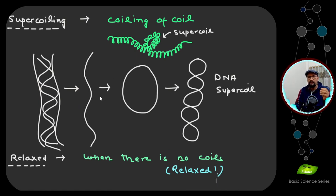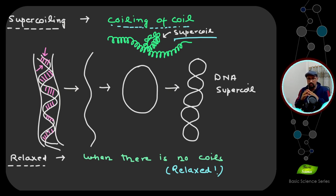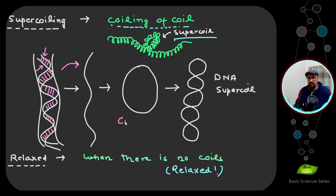Now let's look at supercoiling in a little more detail. Supercoiling is simply the coiling of a coil — if a coil gets coiled again, that's supercoiling. In the context of DNA: these two strands are the DNA strands, connected by hydrogen bonds, forming a double helical structure. Overall it creates a thin thread. If we represent that thread as a single line and put it in circular form, we call it circular DNA — that's what most plasmids can be.